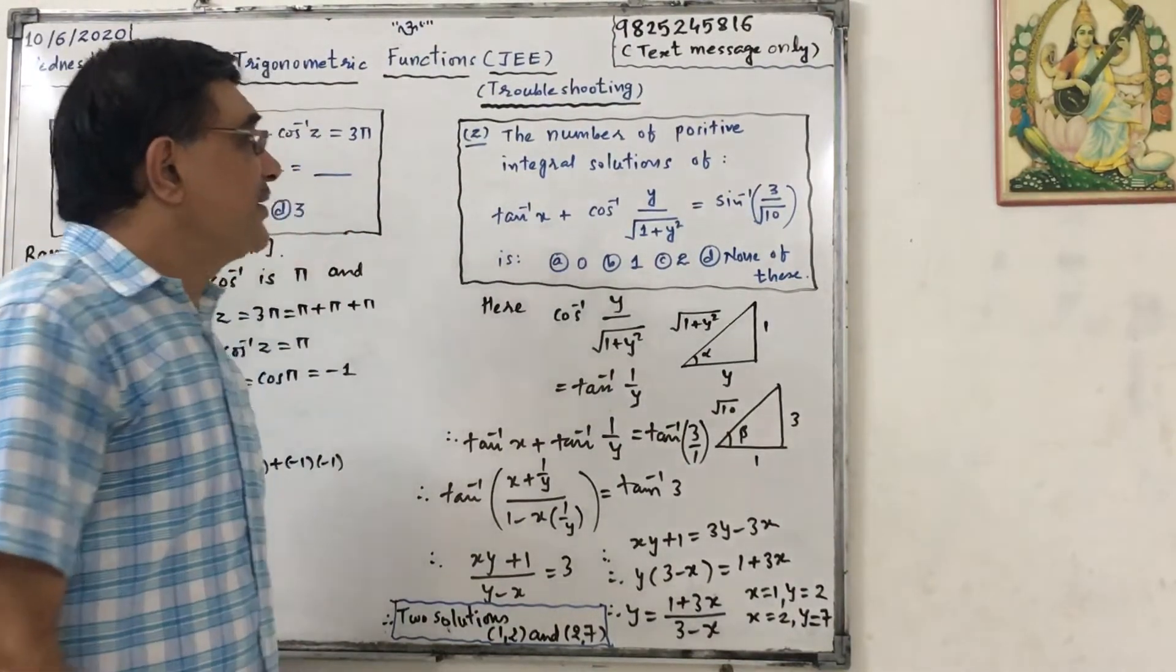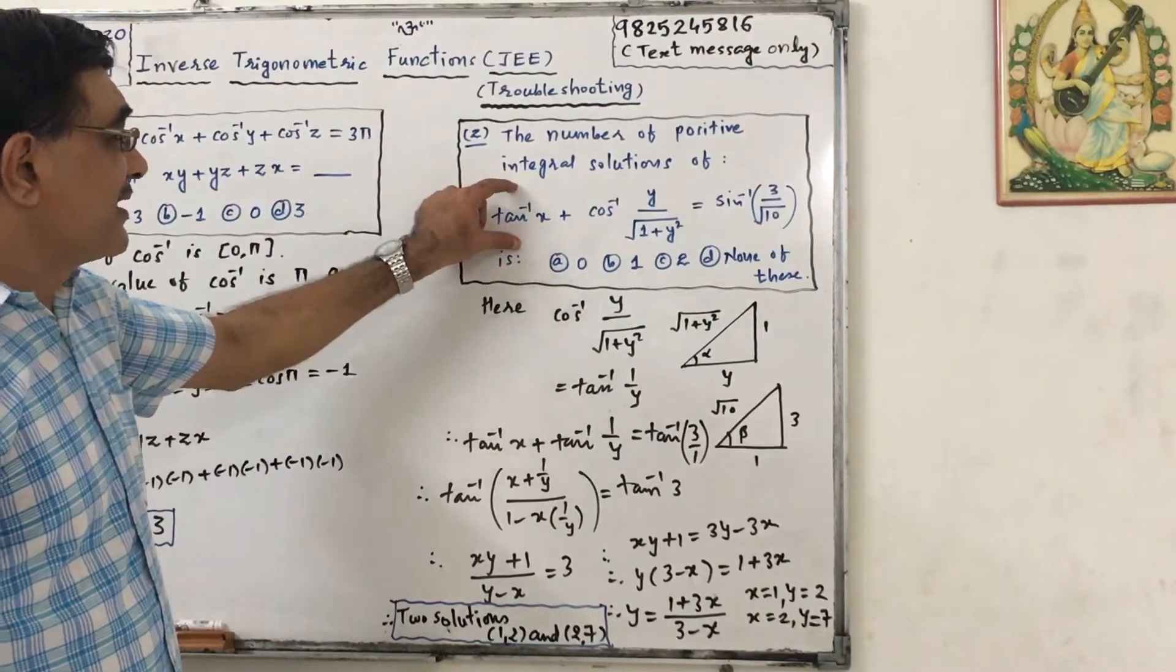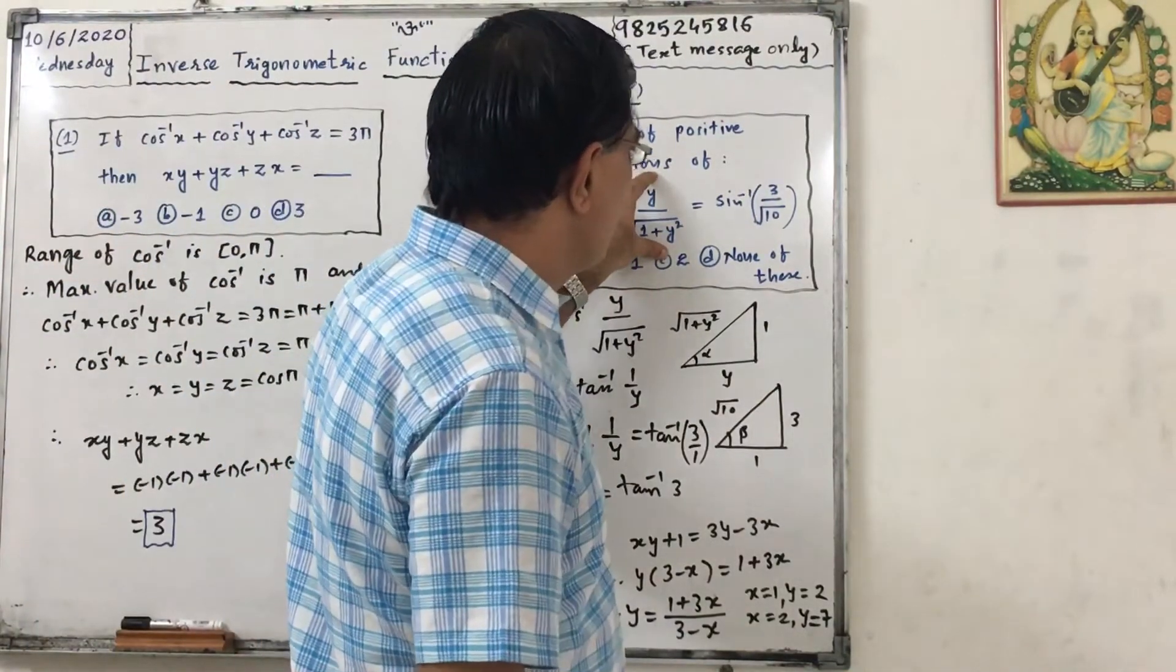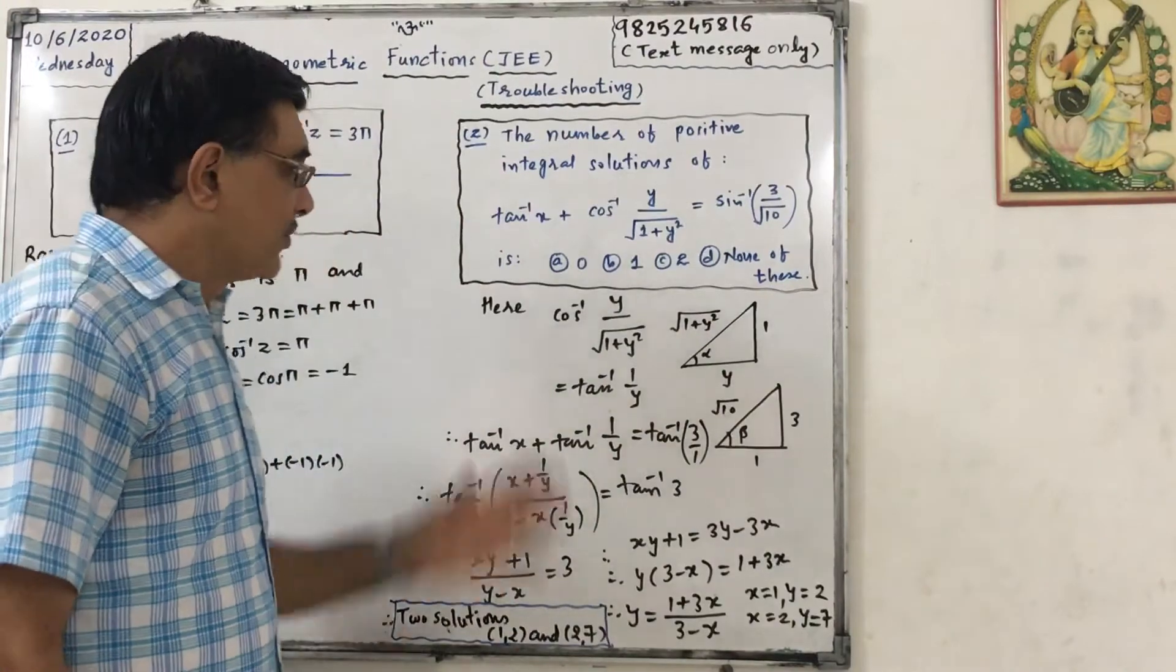Next, the number of positive integral solutions of tan inverse x plus cos inverse of y upon square root of 1 plus y square equals to sin inverse of 3 upon square root of 10. Choices are given.